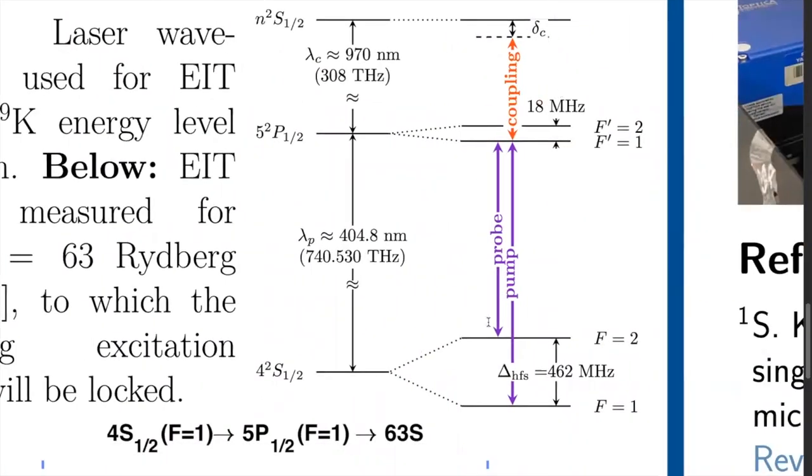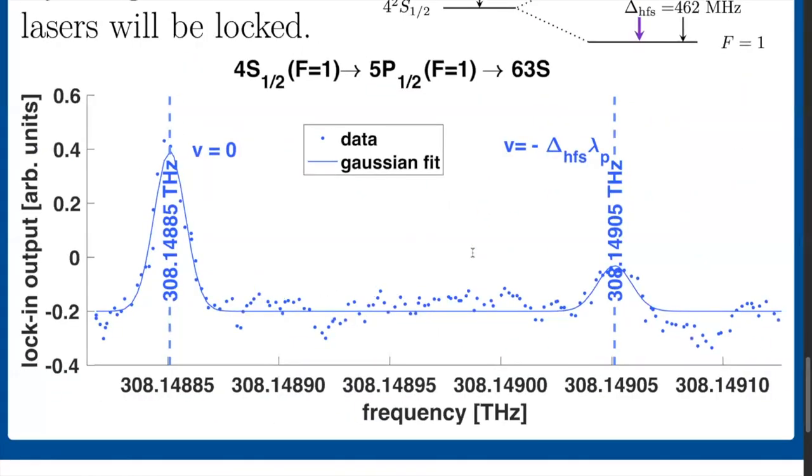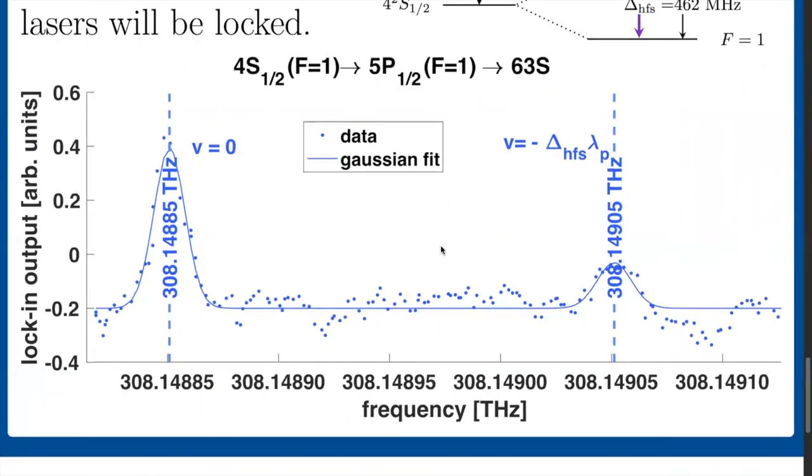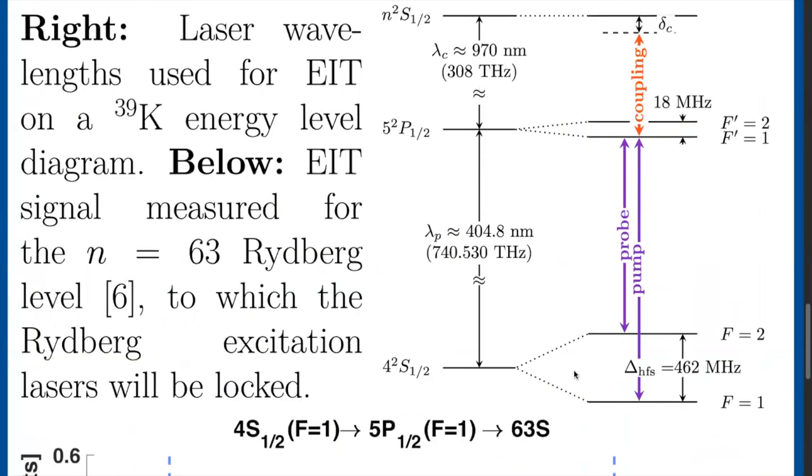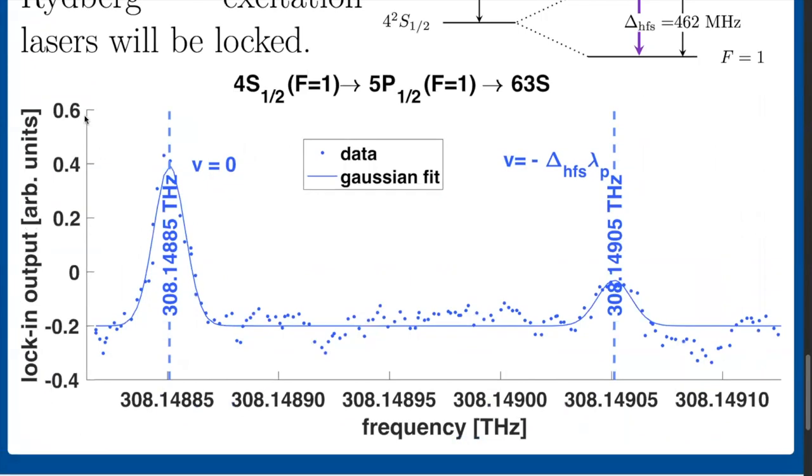Here is an energy level diagram of potassium with the wavelength of the beams we use overlaid. This is the signal that we measured, and the x-axis is the frequency of that coupling beam that we scanned, and the y-axis is the signal strength that came out of our EIT electronics.